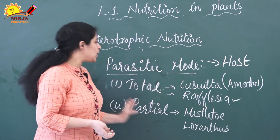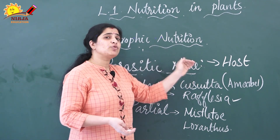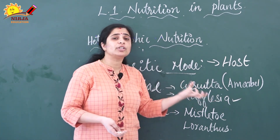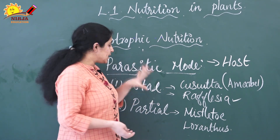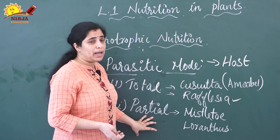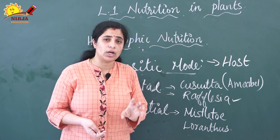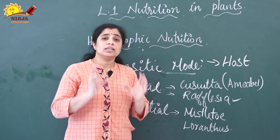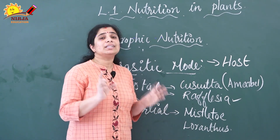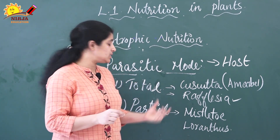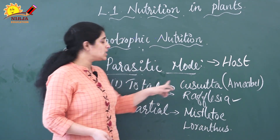To recap parasitic mode of nutrition: plants depend on green plants for nutrition; the green plants providing food are the hosts. This mode is divided into total parasitic plants — getting all nutrients from the host — and partial parasitic plants, which conduct photosynthesis but get water and nutrients from the host. Examples for partial parasitic plants are Mistletoe and Loranthus; for total parasitic plants, Cuscuta and Rafflesia — the largest flower in the world.